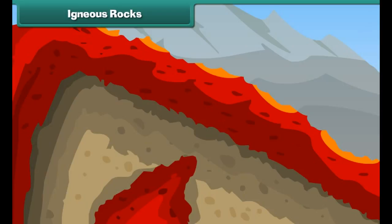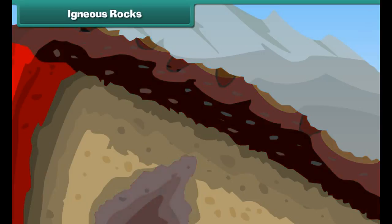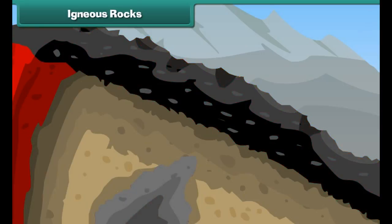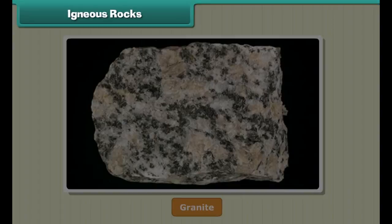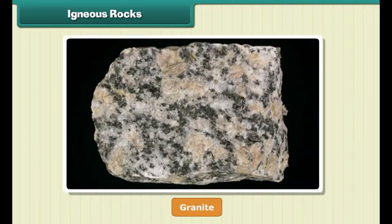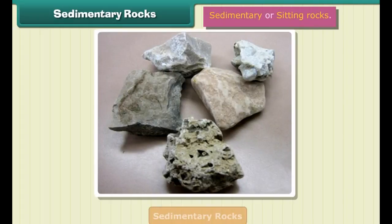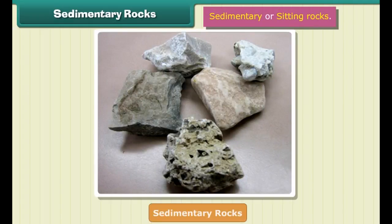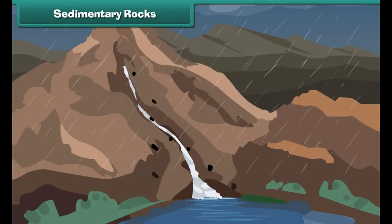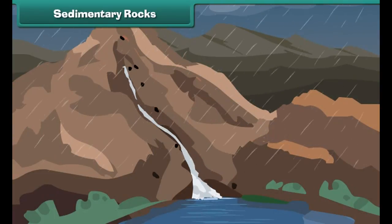Igneous means made from fire. When volcanoes erupt, it causes the liquid rock to rise above the ground. When this liquid rock is present inside the earth, it is called magma. This magma cools and becomes solid. Rocks thus formed are called igneous rocks. They are also called primary rocks. Granite is an example of igneous rock.